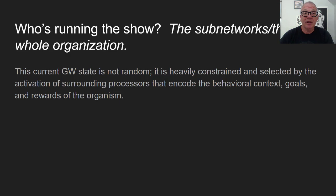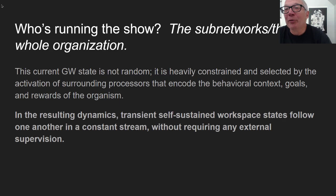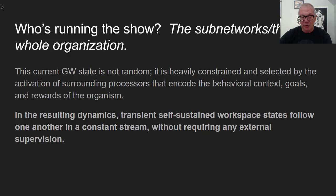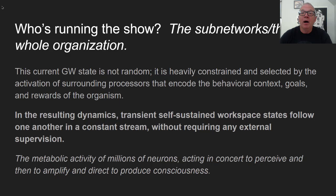One reason the internet can't be conscious is that it can't form a plan and make a sandwich. Transient self-sustained workspace states follow one another in a constant stream without requiring any external supervision — just like when your mind wanders through ideas, thoughts, memories, and fantasies coursing into conscious awareness and then out. The metabolic activity of millions of neurons acting in concert, via global workspace neurons, perceives, amplifies, directs, and produces consciousness in this rolling temporal process.